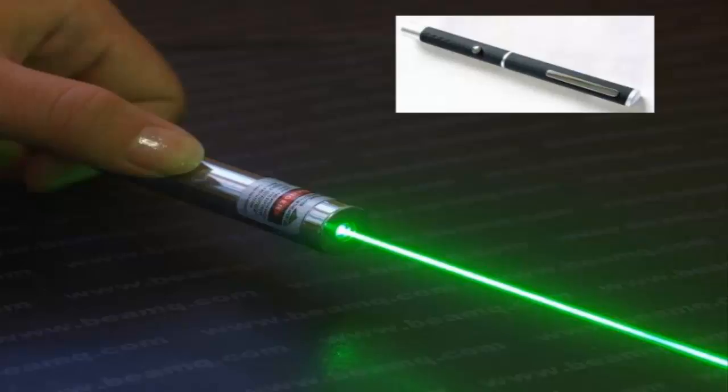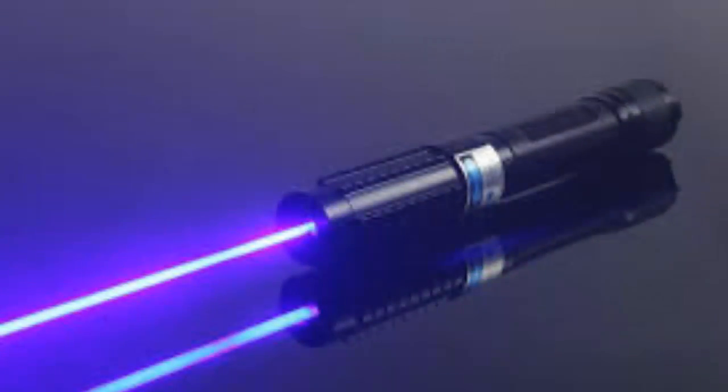Normal light consists of many wavelengths and colors. Laser light, in contrast, does not scatter but moves in the same direction. It produces light in a single color and wavelength.